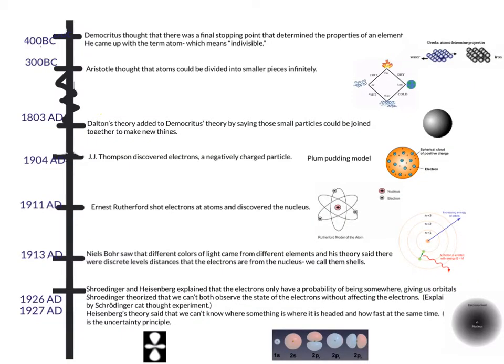This represents a timeline of how the model of an atom has changed over time. Back in 400 BC it was thought that there were small particles. Then Aristotle decided that there were not those small particles. That stopped everything for about 2,000 years. Then again in 1803, Dalton showed that there would be these small particles but he also suggested that they could be joined together.